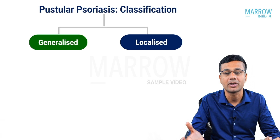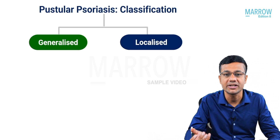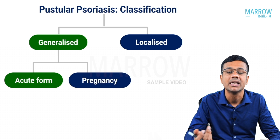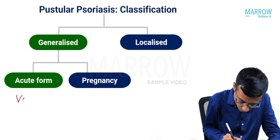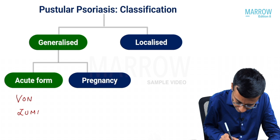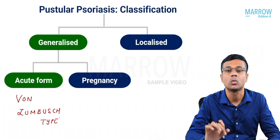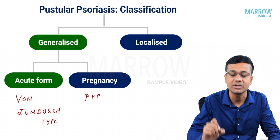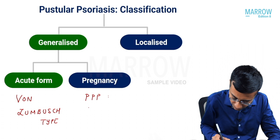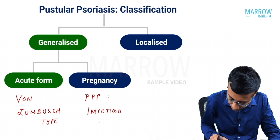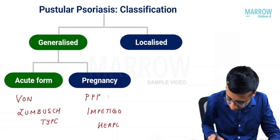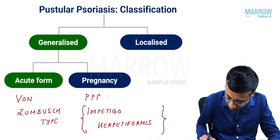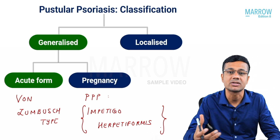Pustular psoriasis is broadly divided into the generalized form and the localized form. The generalized form is further divided into two types: the acute form, called von Zumbusch type, and the pregnancy form, which is referred to as impetigo herpetiformis. Please remember: impetigo herpetiformis is also known as pustular psoriasis of pregnancy.